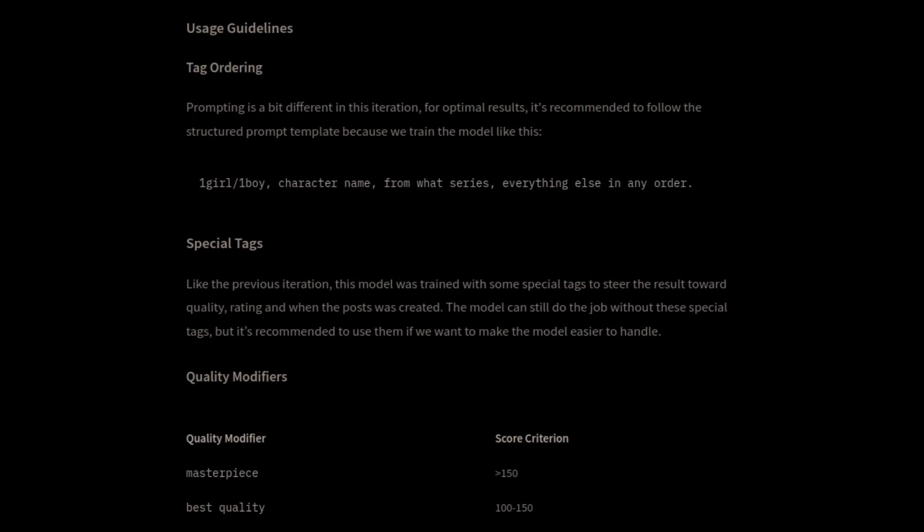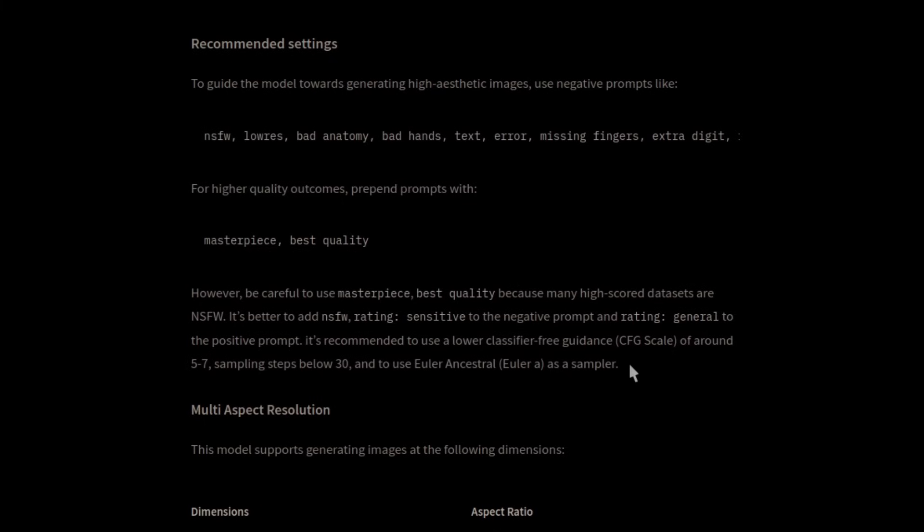For optimal results, their suggested positive prompt format is: one girl / one boy, character name, from what series, and anything else in whatever order. They also recommend using a guidance scale of between 5 and 7, sampling steps below 30, and the Euler Ancestral sampler. But do I follow recommendations all the time? Nah, of course not.